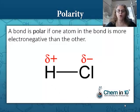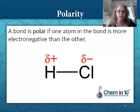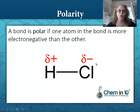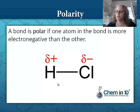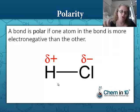A bond is considered polar if one atom in the bond is more electronegative than the other. In this case with hydrogen chloride, we have this lower case delta, the Greek symbol delta, indicating that the delta-negative says that the chlorine is more electronegative than the delta-positive hydrogen. Since chlorine has a greater attraction for the electrons, the electrons are going to spend more time around chlorine, leaving the hydrogen relatively positive.